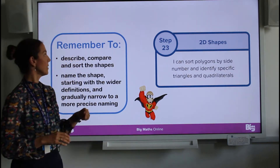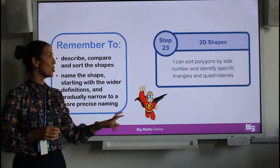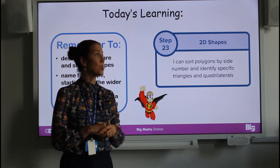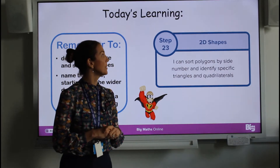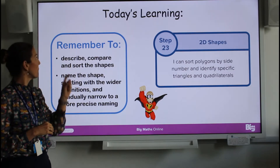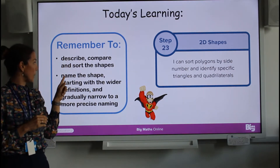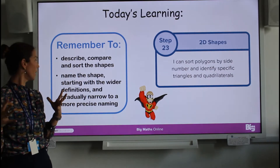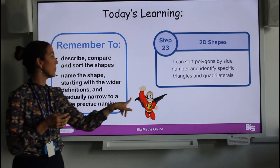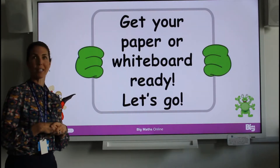Today's learning is slightly different to the one before. Our previous lesson we did halving; this one we're going to do on shapes. By the end of the lesson you can say that you can sort polygons by side number and identify specific triangles and quadrilaterals. We're going to describe, compare, and sort shapes, name them, and start with a wider definition then gradually narrow it down to get to a precise naming. Make sure you have your paper and whiteboard ready.